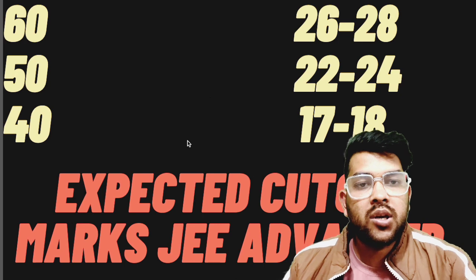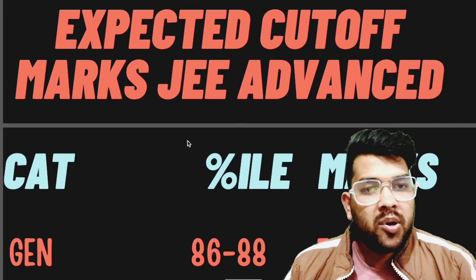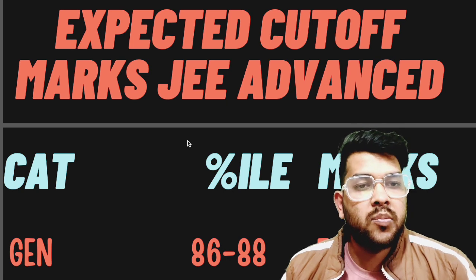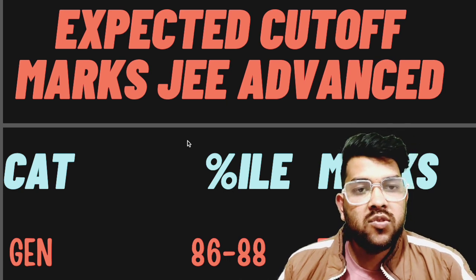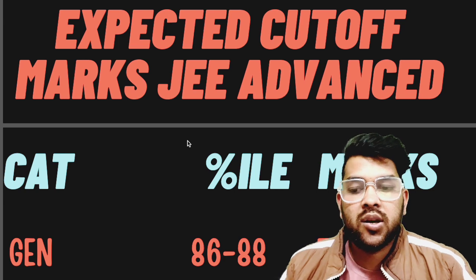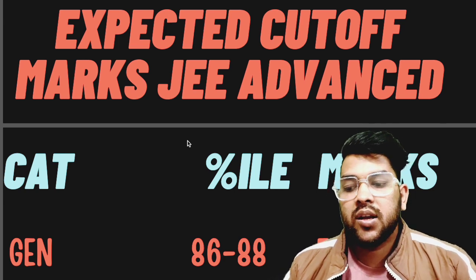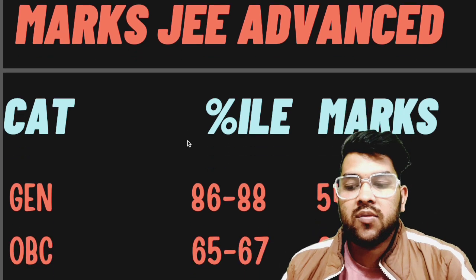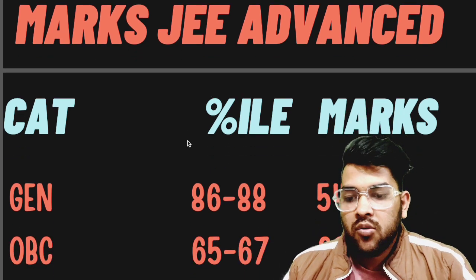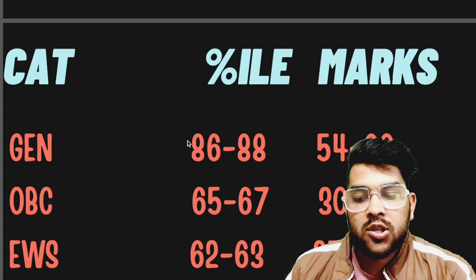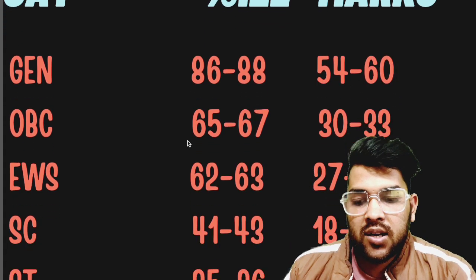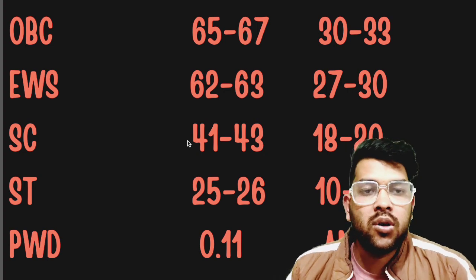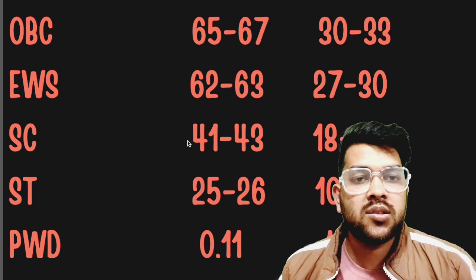Now the most important thing: minimum marks to be eligible for JEE Advanced and the corresponding percentile. The percentile cutoff remains the same even in the next attempt, but marks will change according to the difficulty level of the paper. For General category: 86 to 88 percentile, marks will be 54 to 60. For OBC: 30 to 33 marks, for EWS: 27 to 30, SC: 18 to 20, ST: 10 to 14, and PwD: if you have got 0, 1, or 2 marks, you are eligible for JEE Advanced.